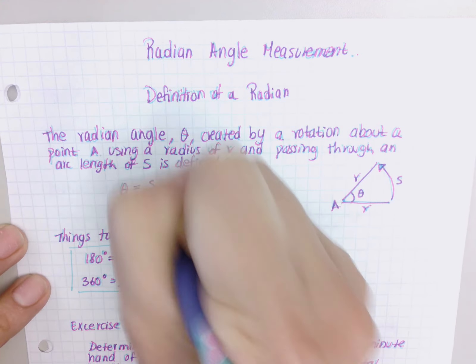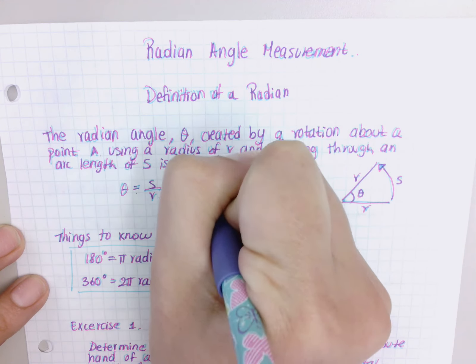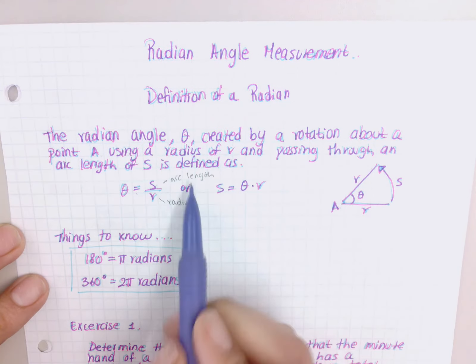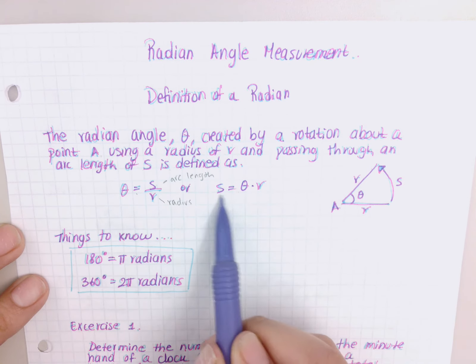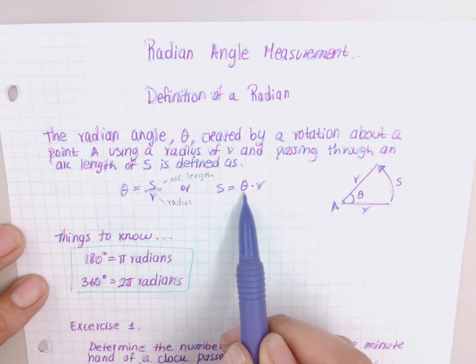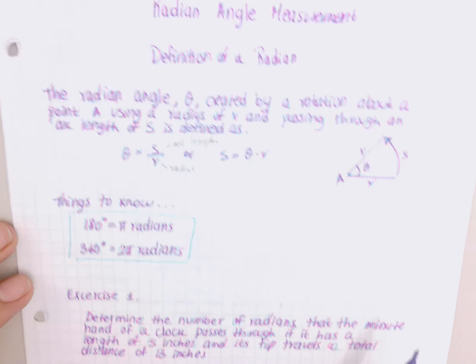It's defined as theta equals that arc length divided by your radius, so it's my radius and that's my arc length. And likewise, if I multiply r on both sides, I end up with the arc length is the same thing as theta times your radius.